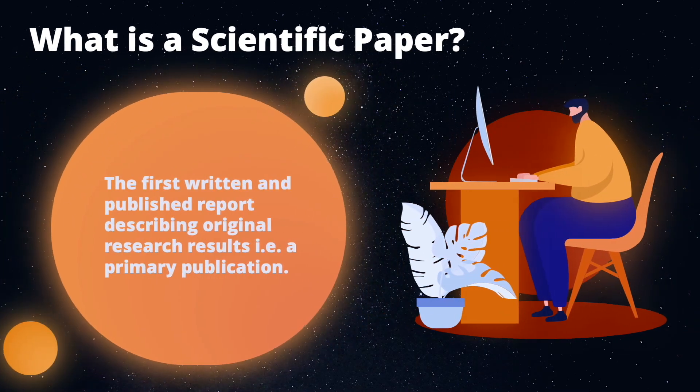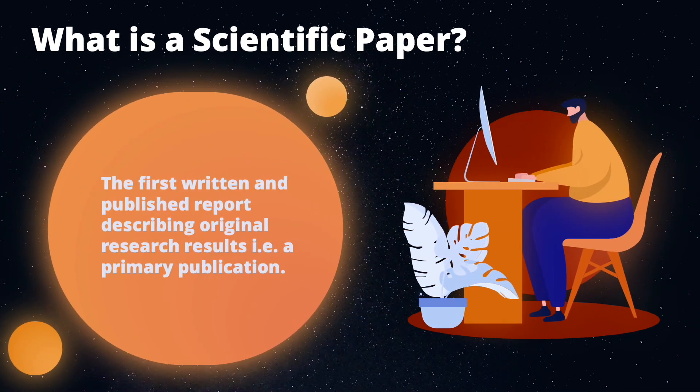So now let's look more in-depth at each type of scientific writing, and we're going to start off with the scientific paper. According to the authors Robert A. Day and Barbara Gastel, a scientific paper is simply the first written and published report describing original research results. In other words, a scientific paper is a primary publication which typically adheres to standard organizational formats.